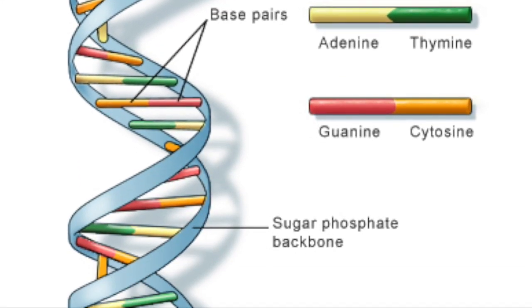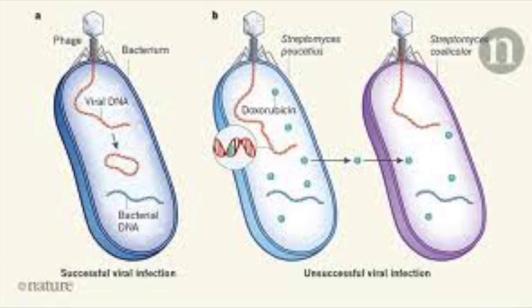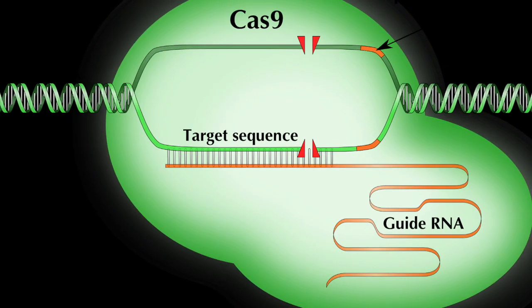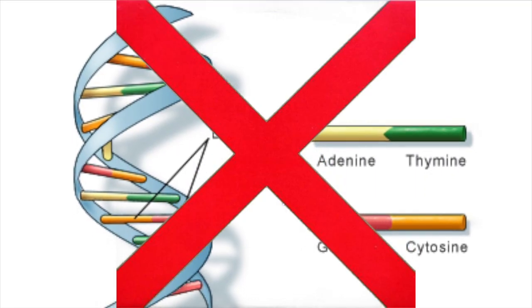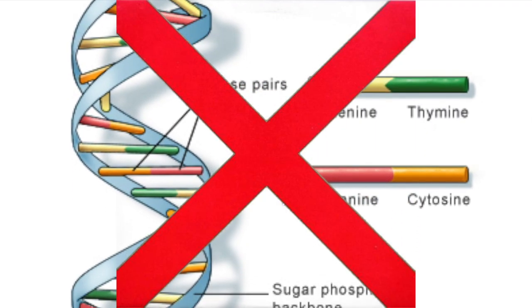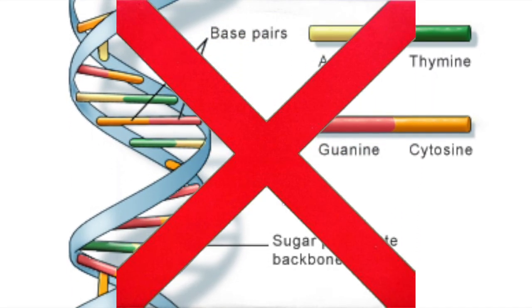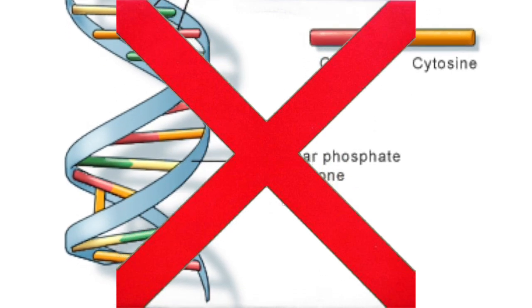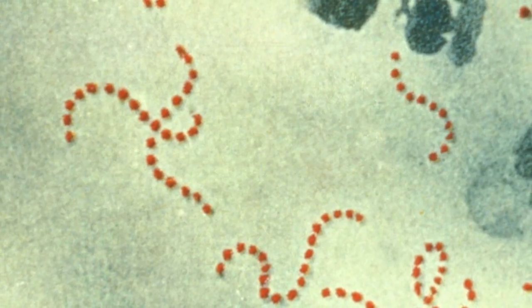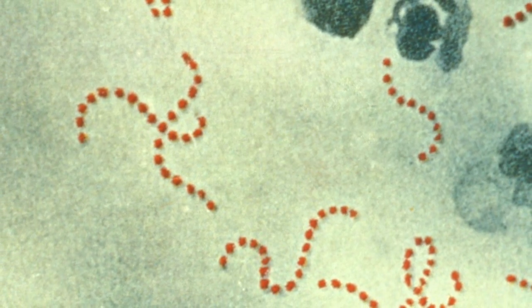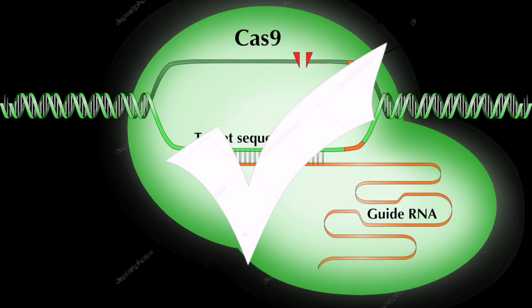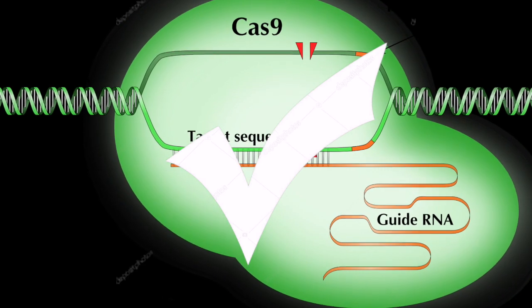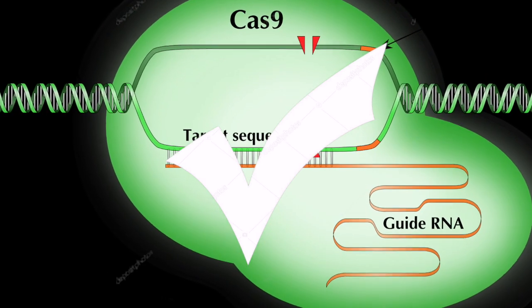CAS9 uses Streptococcus pyogenes to copy the DNA that is being inserted by the virus. Then the CAS9 will interrogate and check if the DNA matches any old scans. If it does, it will sever the connection of DNA, and if it doesn't match, it will still sever and take a scan using Streptococcus pyogenes.